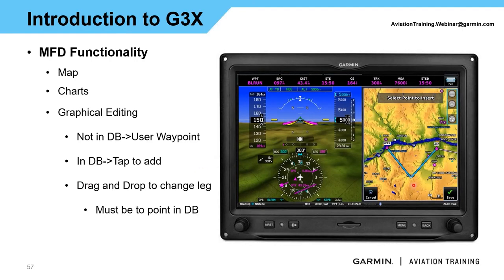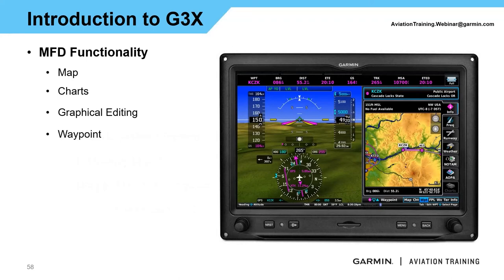You can even do drag and drop: take your route and rubber-band it down to another point on the map — very similar to what we see on the GTN series or the GPS 175, 355, and 375 series. Selecting a waypoint on the map takes you to the waypoint information page, or you can use the big knob to roll over to the waypoint page for a VOR, NDB, or airport. In this case we have CZK, Cascade Locked State, as our destination — that automatically pulled up. Press the cyan box at the top to type in any fix or VOR, and quickly get that information.